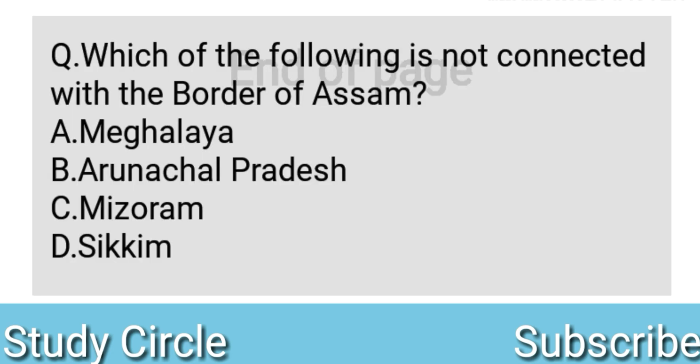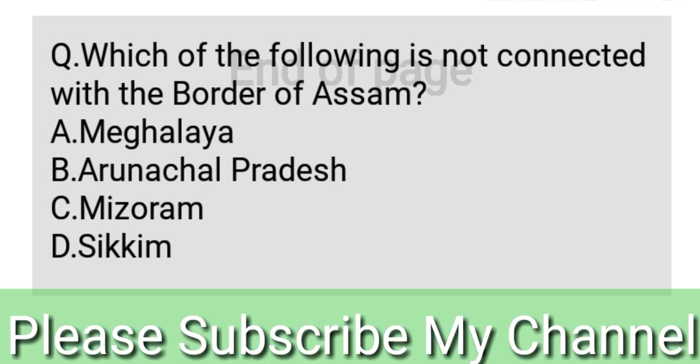Which of the following is not connected with the border of Assam? Option A: Meghalaya. Option B: Arunachal Pradesh. Option C: Mizoram. Option D: Sikkim. Tolar koonkhan rajya Assam's border hojte hongzupta nahoy — so Assam's border logot lagi thoka naay. Yahudhaa tartu hol: D — Sikkim.